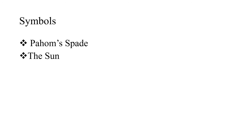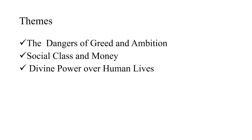We also discussed the symbols used in the prose — one is Pehom's spade and the second is the sun. After the symbols, we talked on the dangers of greed and ambition, which comes under the themes. Right now we have the second theme of the prose: social class and money.